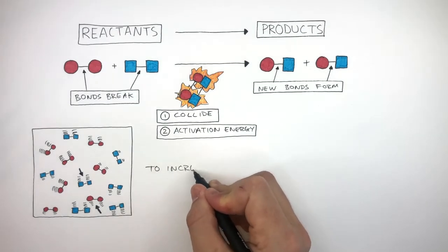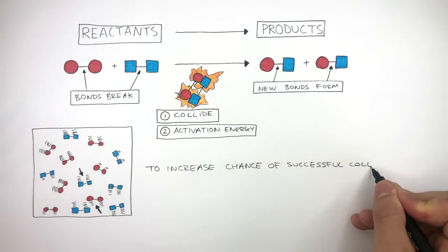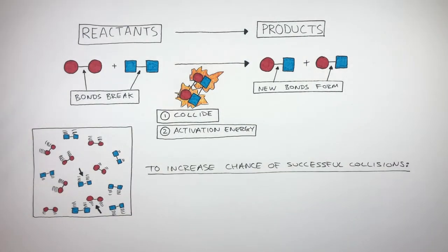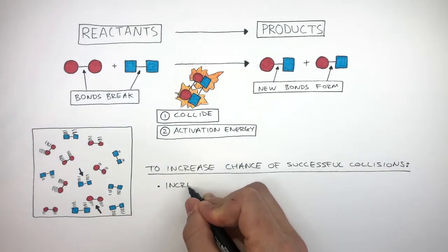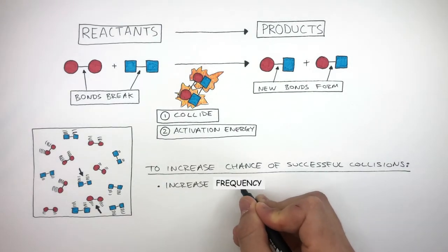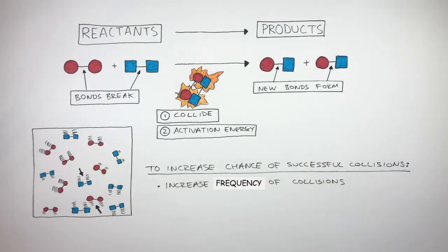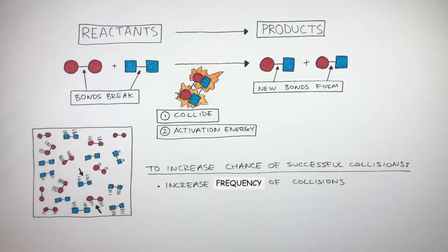So to increase the chance of a successful collision, one of the main things we can do is to increase the frequency of collisions. This makes it more likely for a successful collision to take place. By adding more reacting particles, this will increase the frequency of collisions, making it more likely successful collisions will occur.